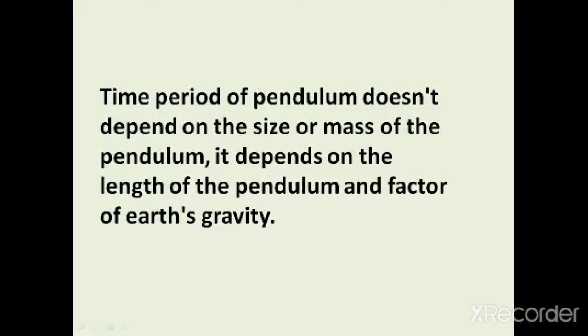If we calculate the time period, what is time period? The time taken by the pendulum to complete one oscillation is called time period. The time period of a pendulum does not depend on the size or mass of the pendulum, that is its bob. It does not depend on the size or mass of the bob, but it depends on the length of the pendulum, that is the length of the string, and the factor of Earth's gravity.